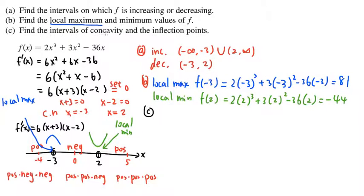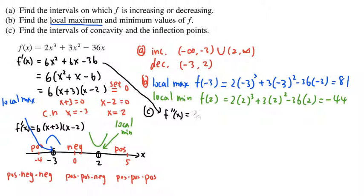Lastly, we find concavity by computing the second derivative. Looking at f prime of x, we differentiate again: the derivative of 6x squared is 12x, and the derivative of 6x is plus 6. The derivative of negative 36 is 0, so f double prime of x equals 12x plus 6. Setting this equal to 0: 12x equals negative 6, so x equals negative one half.